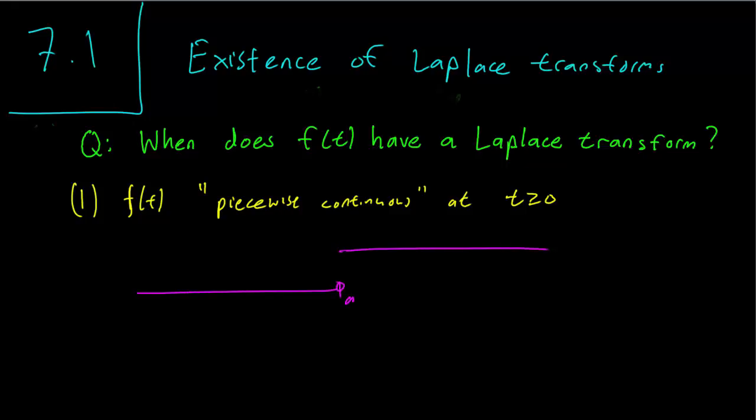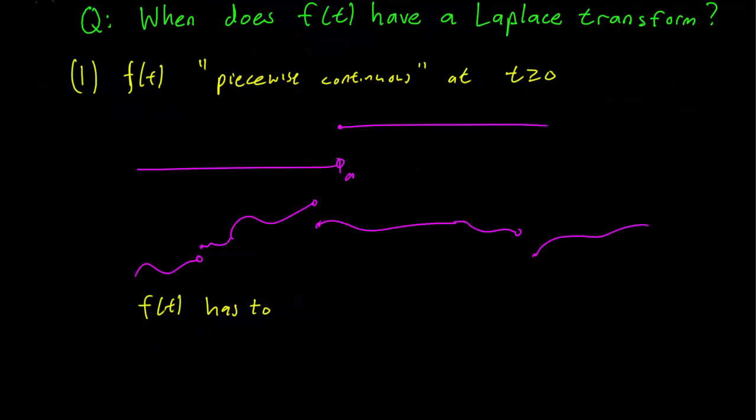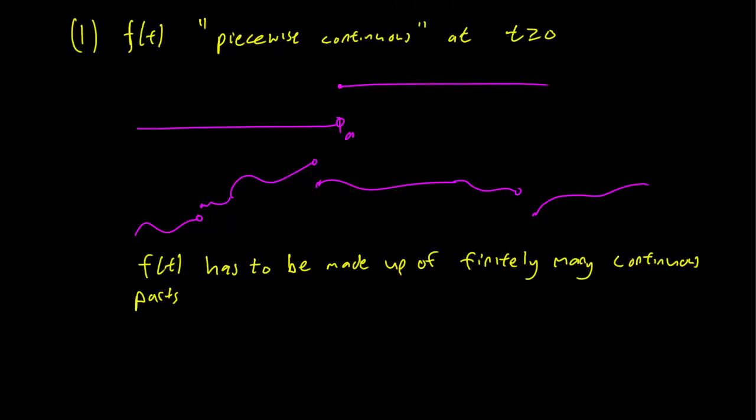It's the one that just has this jump at A. So a piecewise continuous function is simply one that can be written down as finitely many continuous functions, like so. In other words, F(t) has to be made up of finitely many continuous parts. So you can't have infinitely many continuous parts, there has to be only a finite number of jumps. And also, as an additional condition, whose endpoints have finite limits.